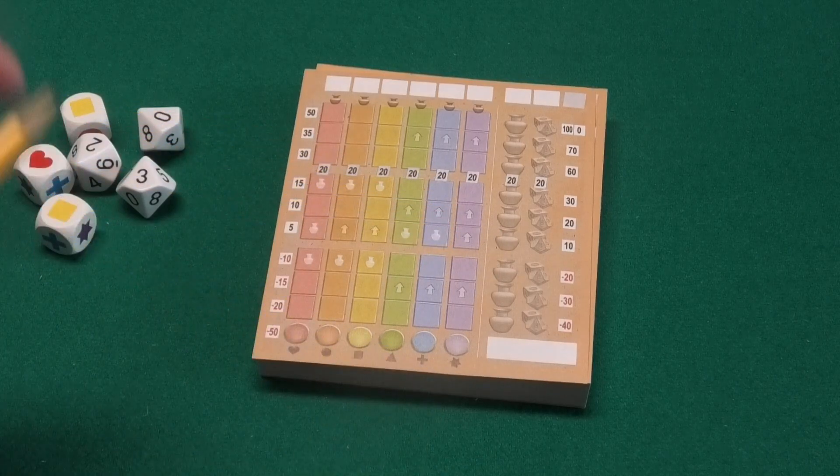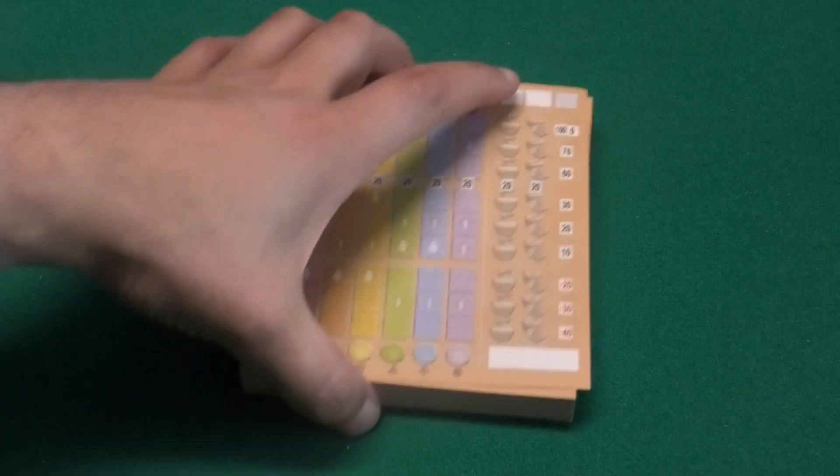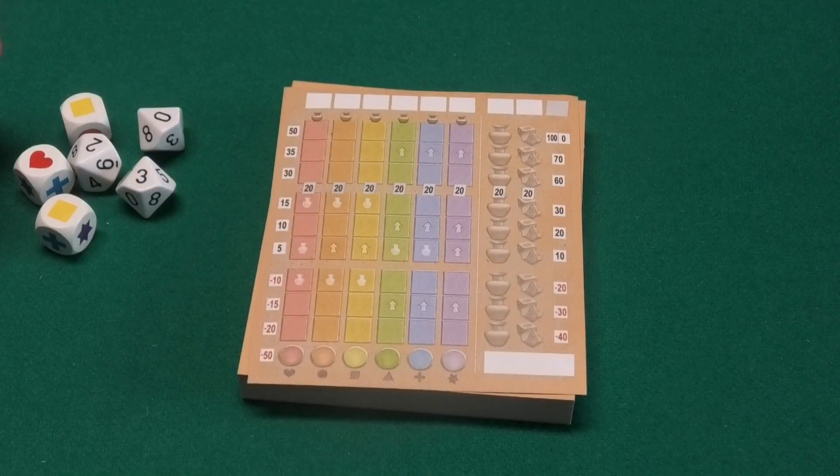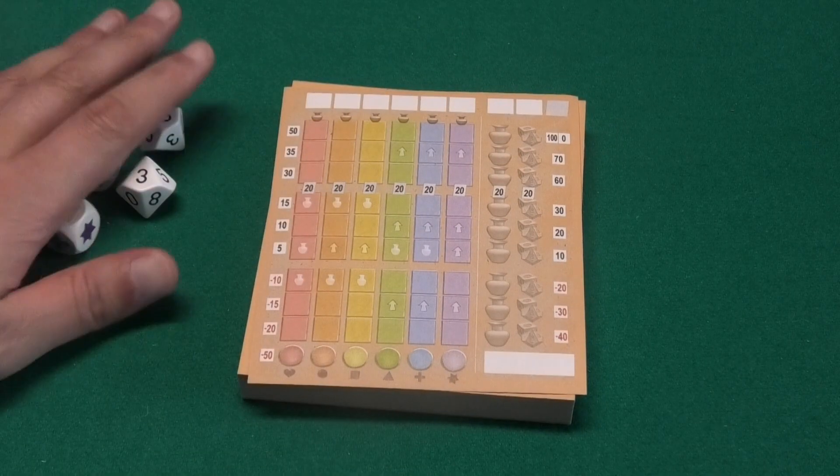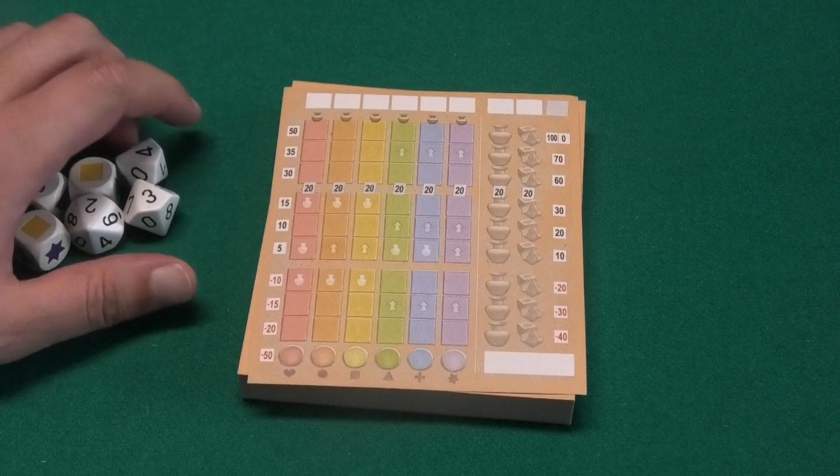Everyone will get one score sheet. One player will be the active player for the first turn, and after that we go clockwise. Then the next player will be the active player, and so on.